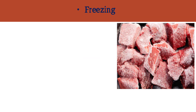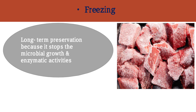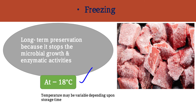Freezing is another method of meat preservation, applied for long-term preservation because it stops microbial growth and enzymatic activity. It is done at minus 18 degrees Celsius. The temperature may be variable depending upon the storage time required.